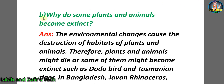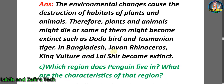Question B: why do some plants and animals become extinct? Answer: environmental changes cause the destruction of habitats of plants and animals. Therefore, plants and animals might die or some of them might become extinct, such as the dodo bird and Tasmanian tiger. In Bangladesh, the Javan rhinoceros, king vulture, and lal shir have become extinct.